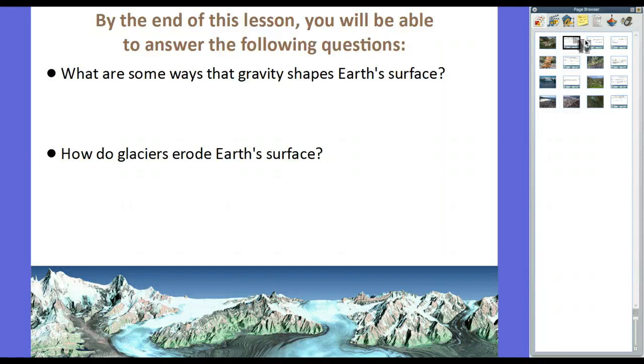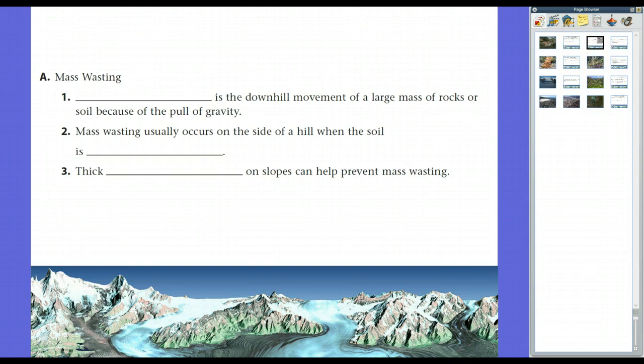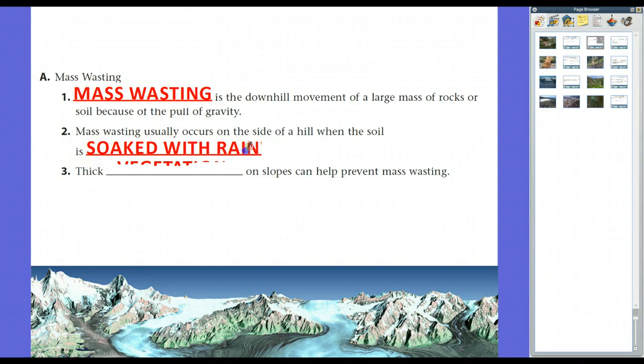Now, we know erosion is the carrying of material by wind, water, waves, things like that. But also, gravity has a great deal to do with this. And a term that we use for erosion through gravity is what we call mass wasting. And that's the downhill movement of a large mass of rocks or soil because of the pull of gravity. Mass wasting usually occurs on the side of a hill when the soil is really soaked with rainwater.